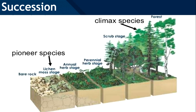For example, there was an ecosystem but it was destroyed — let's say by a volcanic eruption — and it became a barren piece of rocky land with no signs of life, but slowly life started there. That's primary succession.